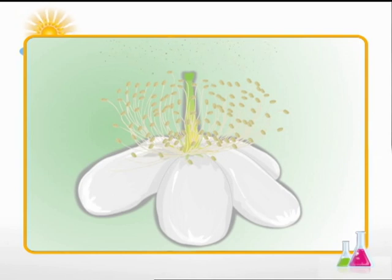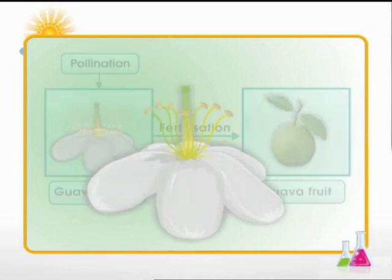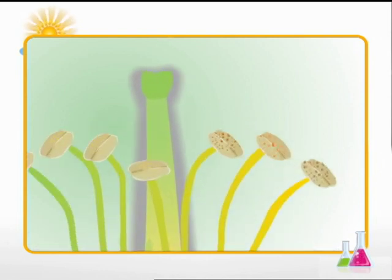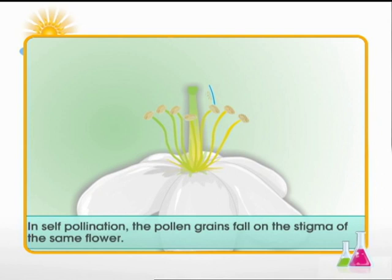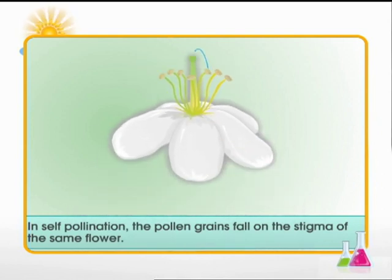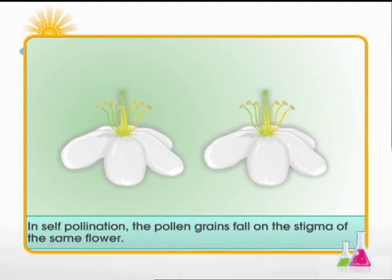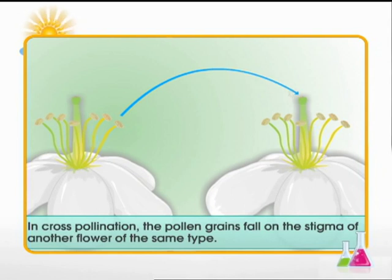Flowers develop into fruits as a result of two very important processes: pollination followed by fertilization in plants. Pollination is the process of transfer of pollen from the anthers to the stigma of a flower. When the pollen falls on the stigma in the same flower, it is called self-pollination. When it falls on the stigma of another flower of the same plant or of another plant, it is called cross-pollination.